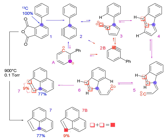Isotopic labeling is a technique used to track the passage of an isotope — an atom with a detectable variation in neutron count — through a reaction, metabolic pathway, or cell.